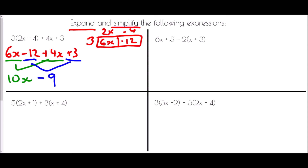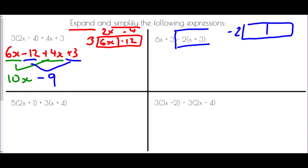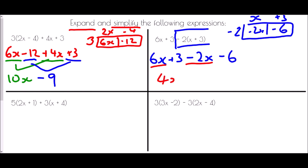In this example the bracket is at the end with a -2 in front. Expanding -2(x + 3) gives -2x and -2 times +3 = -6. Writing back into the expression: 6x + 3 subtract 2x subtract 6. Collecting like terms: 6x - 2x = 4x, and +3 - 6 = -3. Answer: 4x - 3.